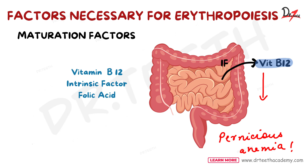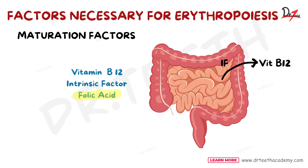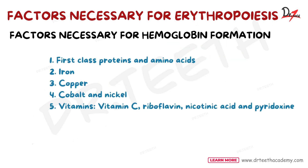Absence of intrinsic factor also leads to pernicious anemia due to failure of vitamin B12 absorption. This deficiency occurs in conditions like severe gastritis, ulcer, and gastrectomy. Folic acid is also essential for DNA synthesis. Deficiency of folic acid decreases DNA synthesis, causing maturation failure — the cells remain large and stay in the megaloblastic (pro-erythroblastic) stage, leading to megaloblastic anemia.